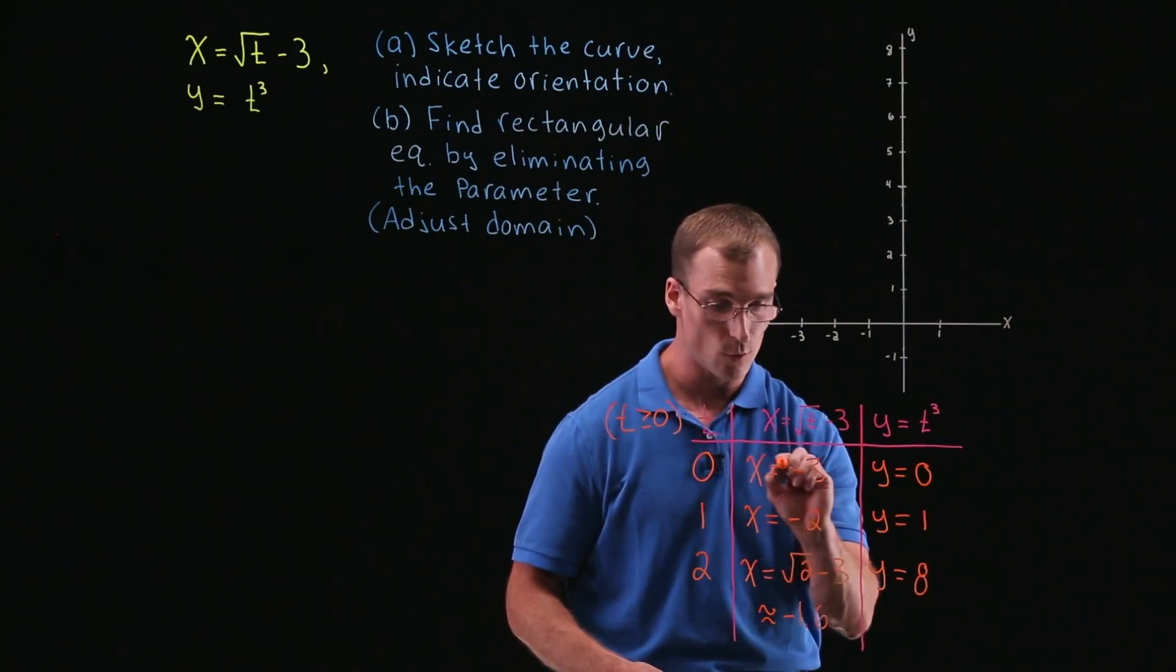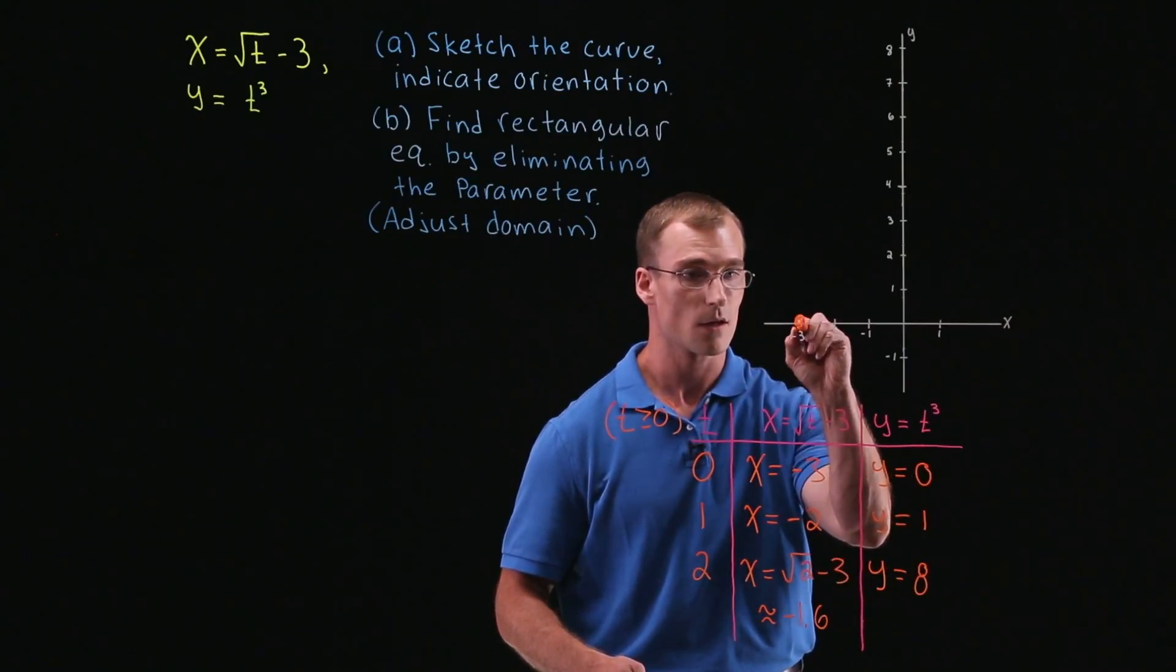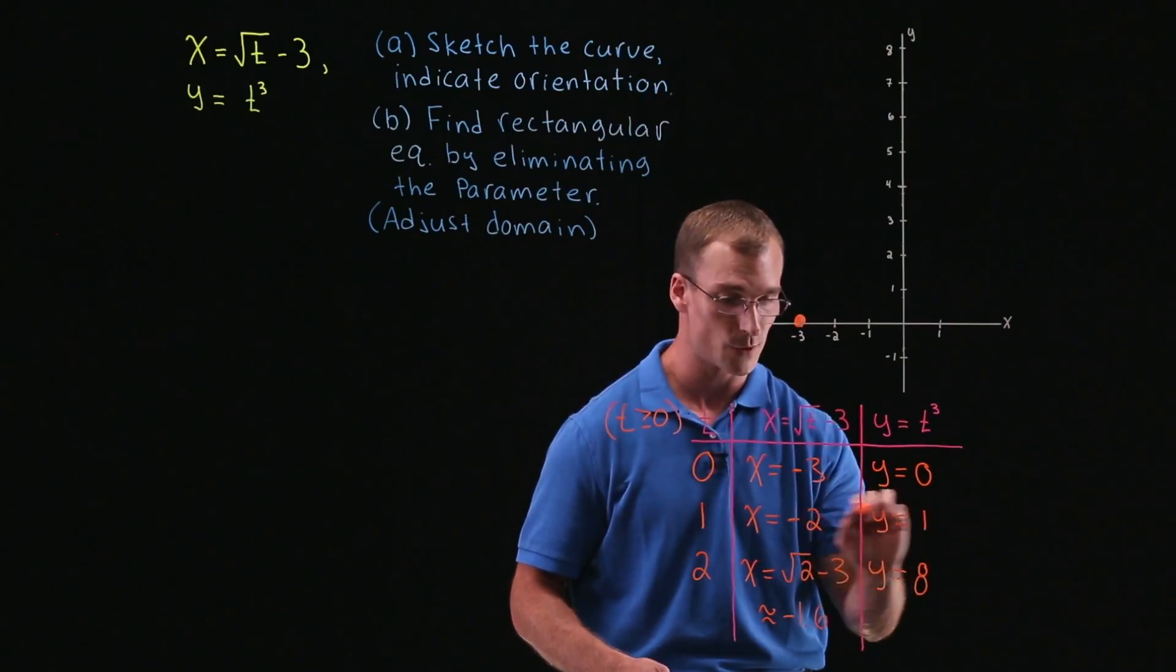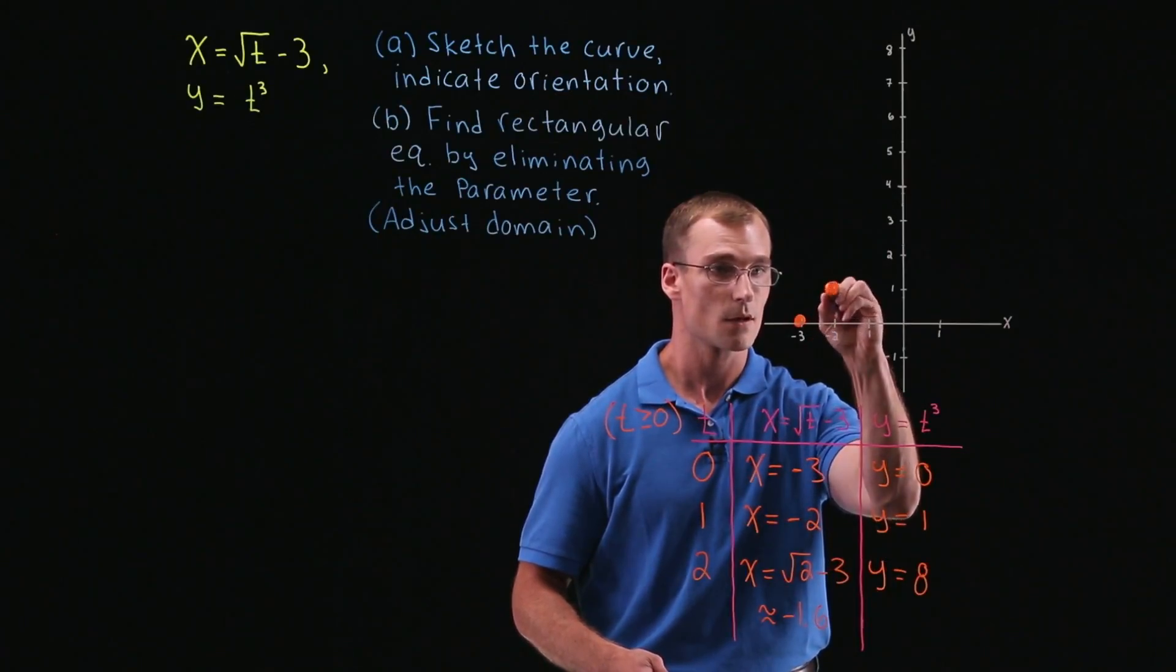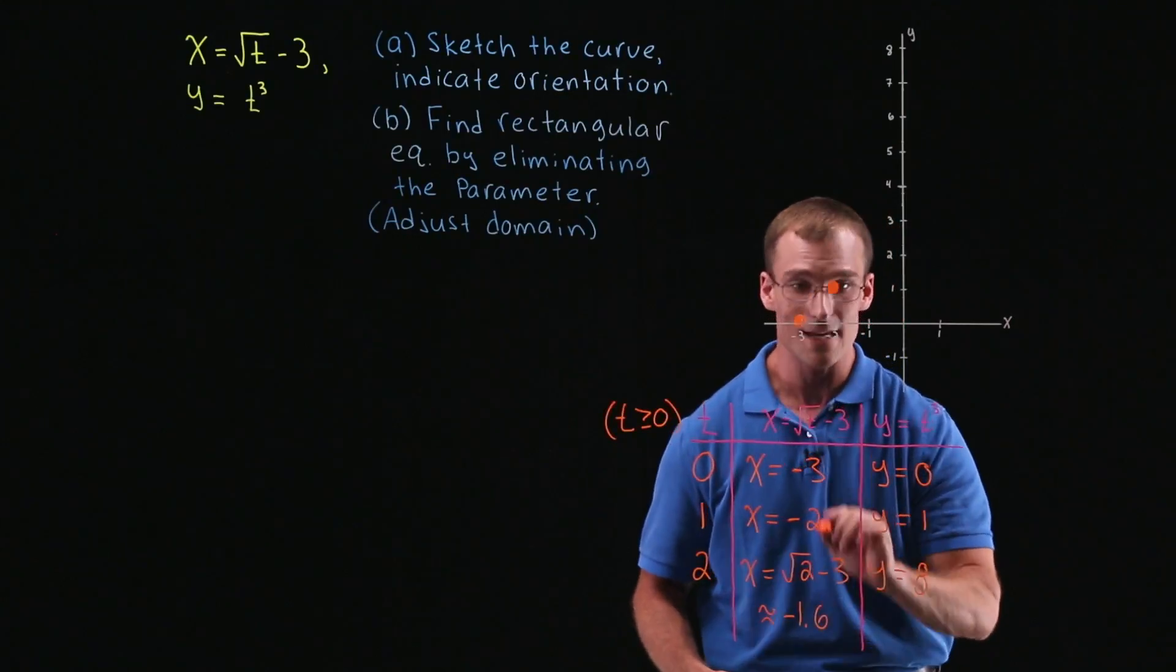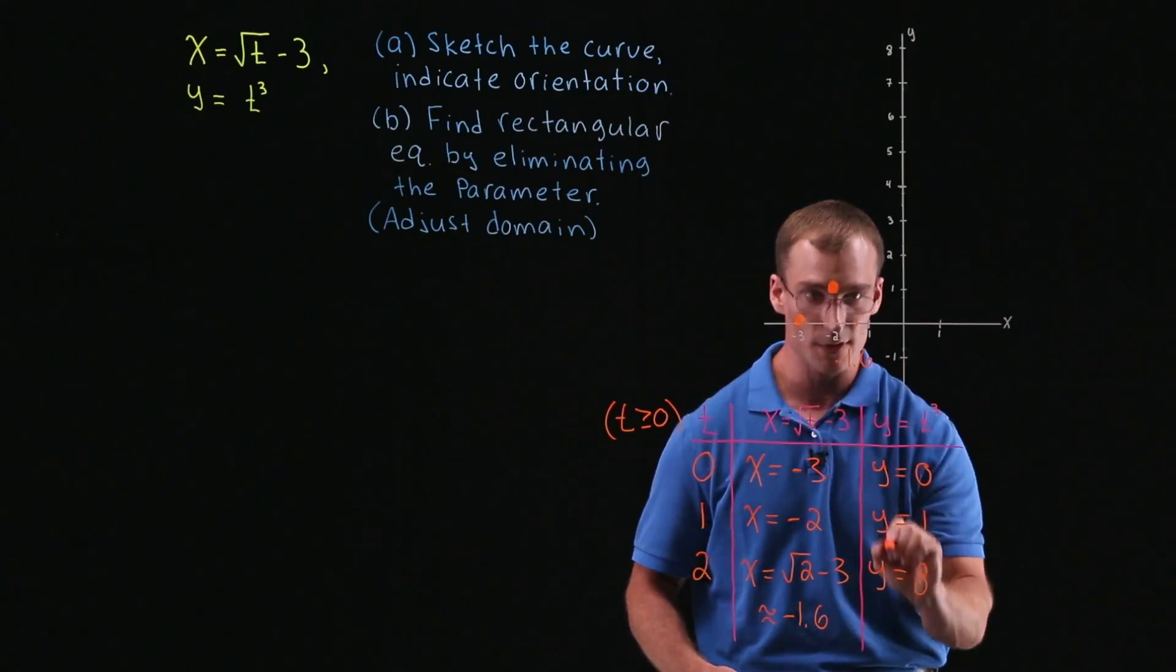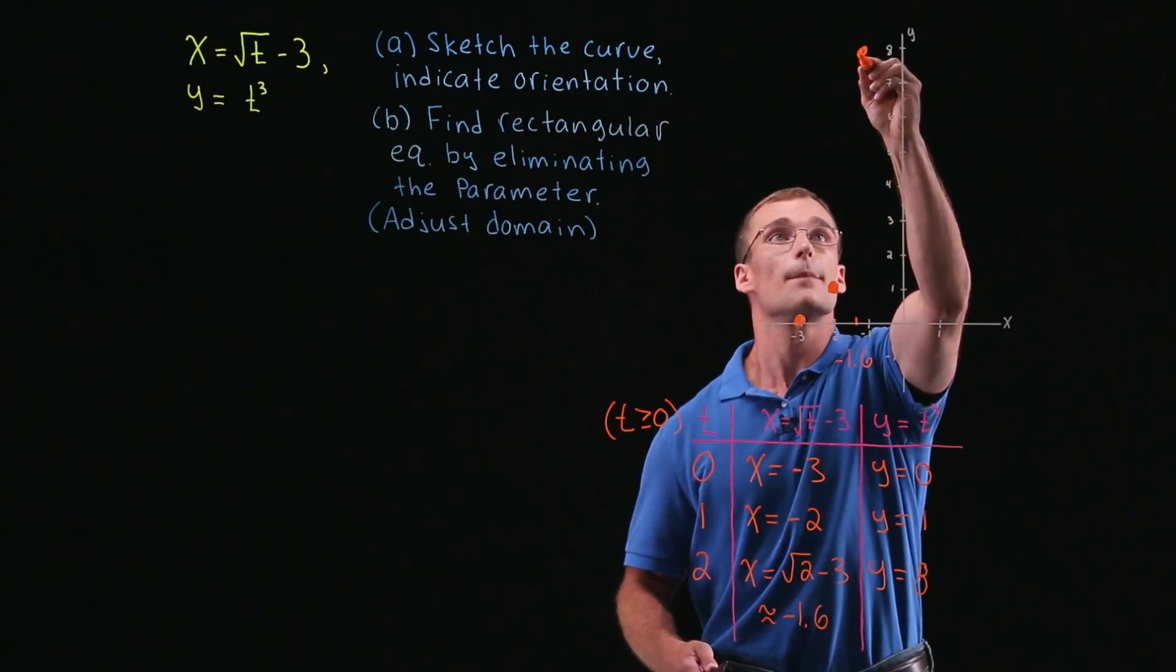So when t was 0, we have the point x is negative 3, 0, or a point here. And when t was 1, we have x is negative 2, y is 1. So x is negative 2, y is 1. And when t was 2, x is negative 1.6. So approximately here, x is negative 1.6, and y is 8. All the way up at our top.